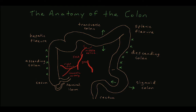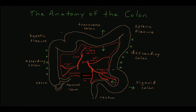Branches of the inferior mesenteric artery include the left colic artery, which supplies blood to the descending colon, the sigmoid arteries, which supply the sigmoid colon, and the superior rectal or superior hemorrhoidal artery, which supplies the proximal rectum. The terminal branches of all these arteries anastomose along the margin of the colon, creating an arcade known as the marginal artery of Drummond.